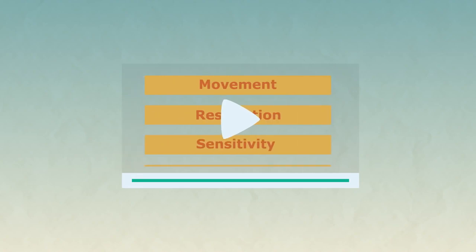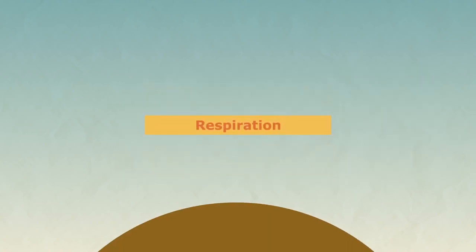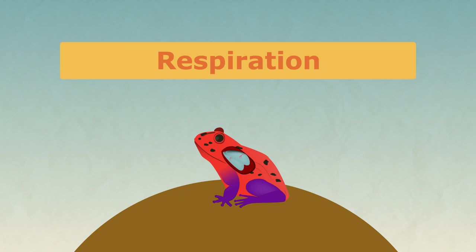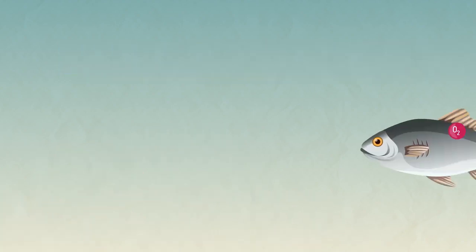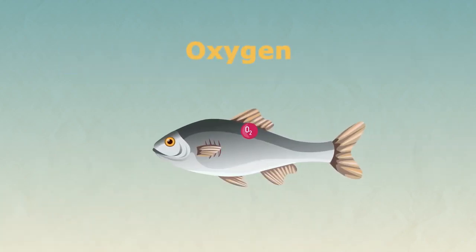As already explained in a previous video on the seven life processes, respiration is carried out by all living things. Animals need oxygen to carry out aerobic respiration and they need to get rid of the waste product called carbon dioxide.